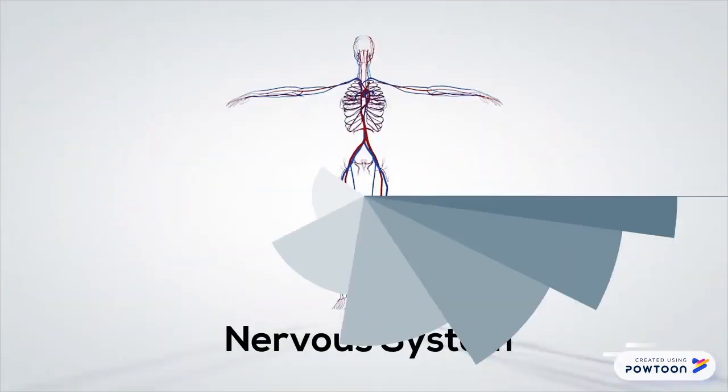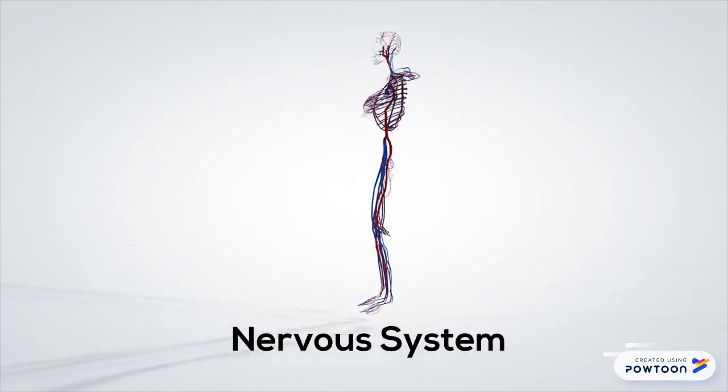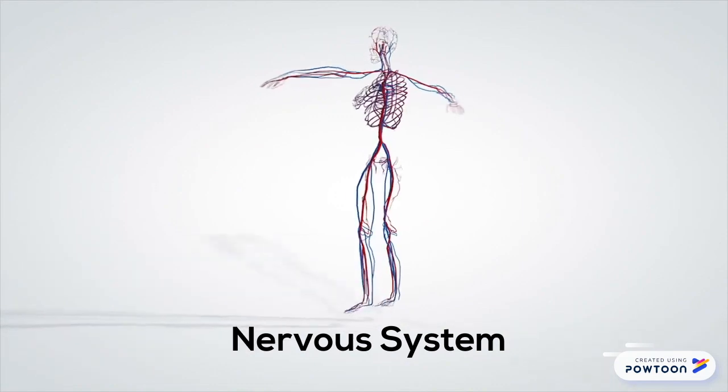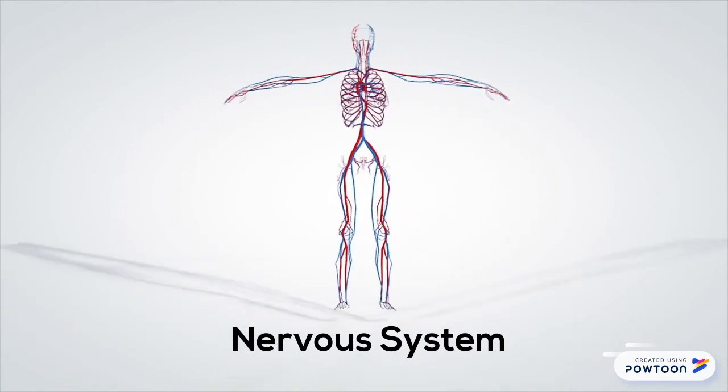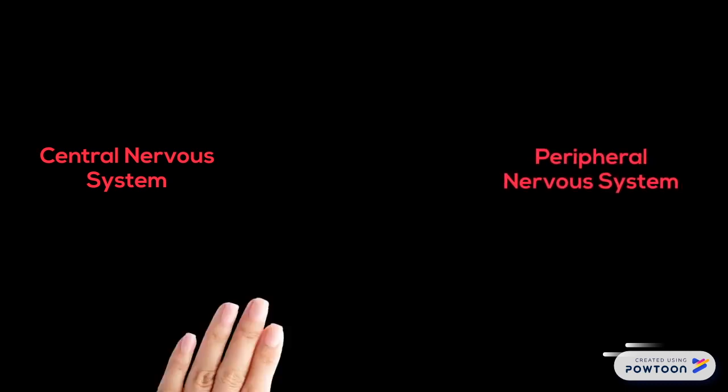The nervous system is a network of nerves and nerve cells that transmit impulses throughout the body. The nervous system contains two parts: the central nervous system and the peripheral nervous system.